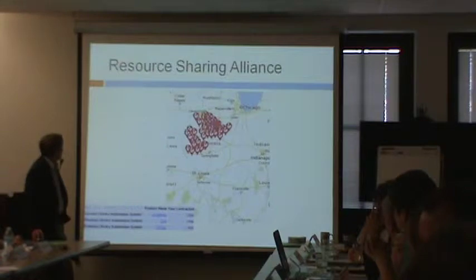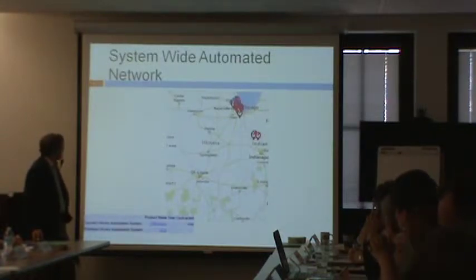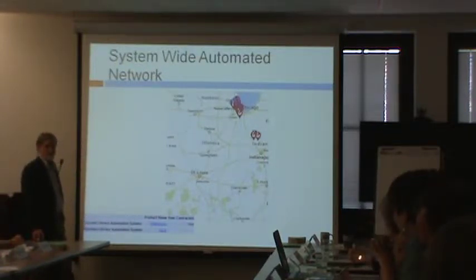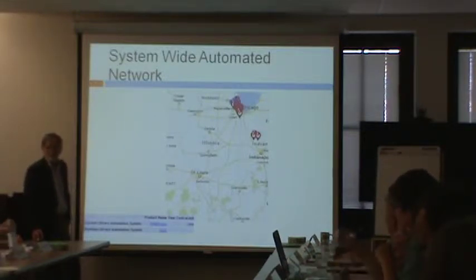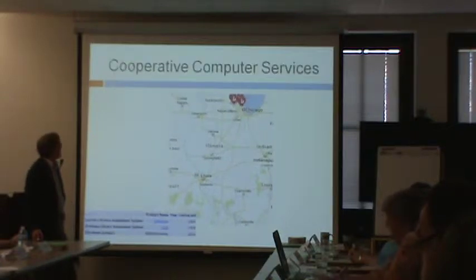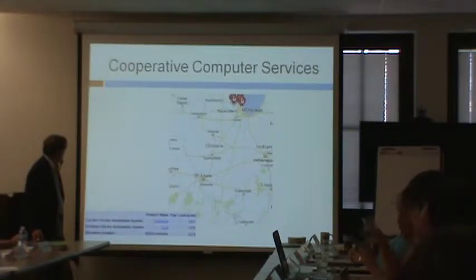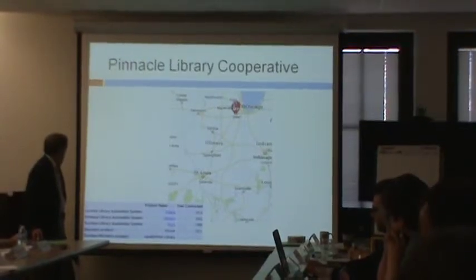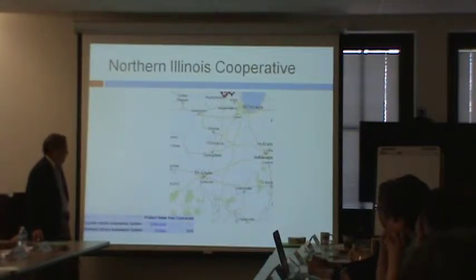RSA is in the northwestern part of the state, on Symphony since 2006. CCS, up north of Chicago, has been on Symphony since 2001. Link has been on Symphony since 2002 and is moving over to the ERA. Pinnacle is on Polaris since 2002. Northern Illinois — oddly enough in the northern part of the state — and there's a Voyager installation as well.